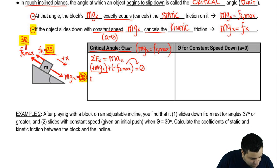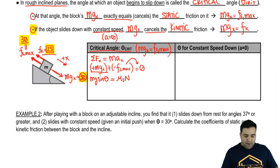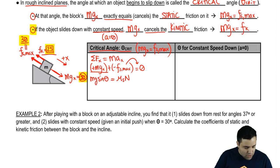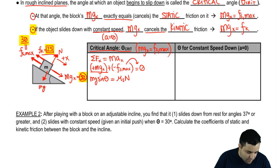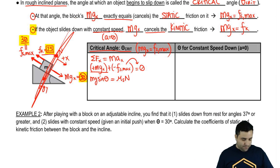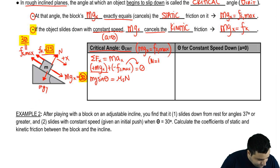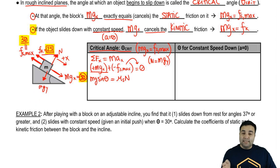Expanding these expressions: instead of mgx I write MG sine of theta, and instead of friction I write mu-static times normal. In inclined plane problems, normal equals MGY as long as those are the only forces on the y-axis, so normal equals MG cosine of theta.